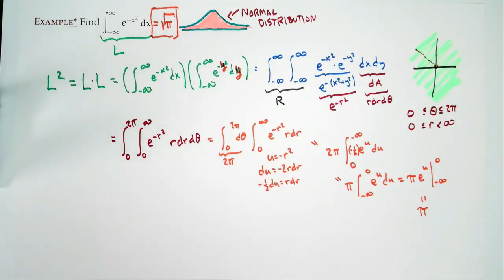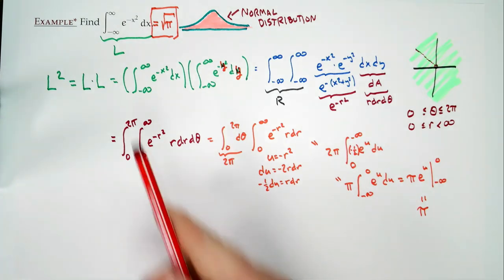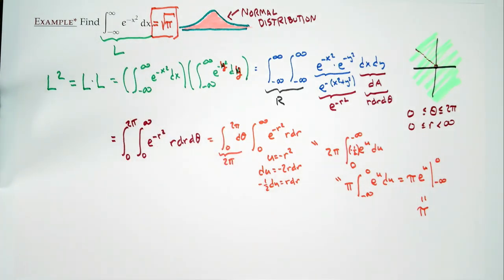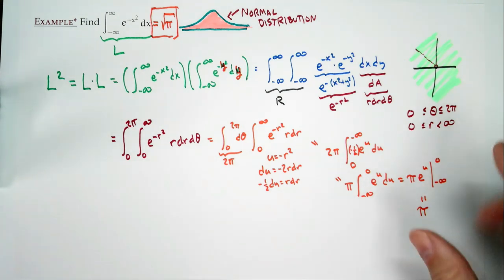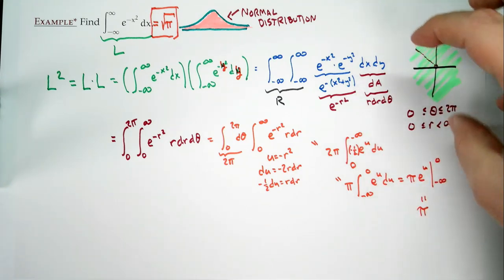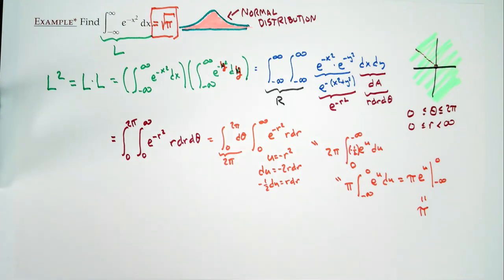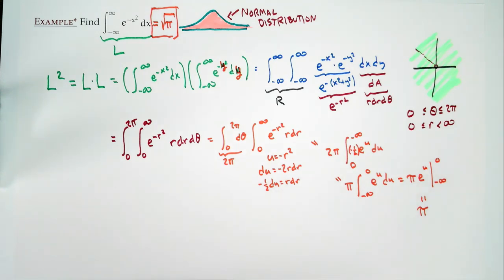If you've ever taken statistics and wondered why √π shows up in the bell curve — which involves the exponential function with nothing to do with trigonometry or geometry — the answer is there's hidden geometry inside. We're using the rotational symmetry of the plane to carry out the integration. Sometimes the shortest distance between two points is along a curved line in a plane you don't see. This is a beautiful idea.